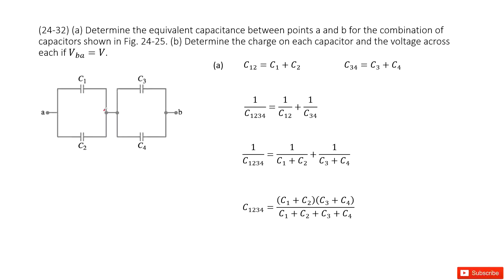First, we look at capacitors C1 and C2. This is a parallel connection, and it can be replaced with equivalent capacitance C12. Since this is a parallel connection, we have the equation C12 = C1 + C2.